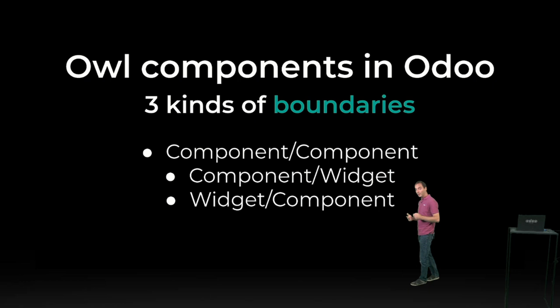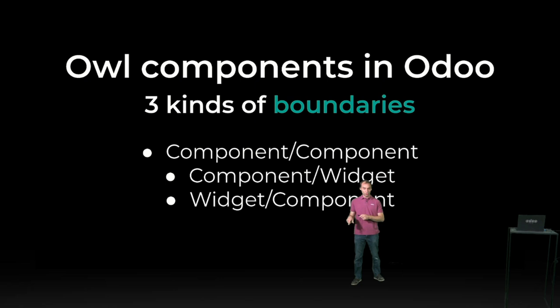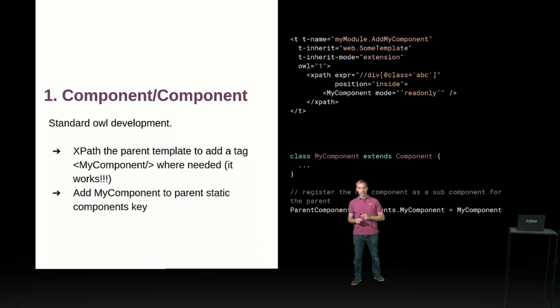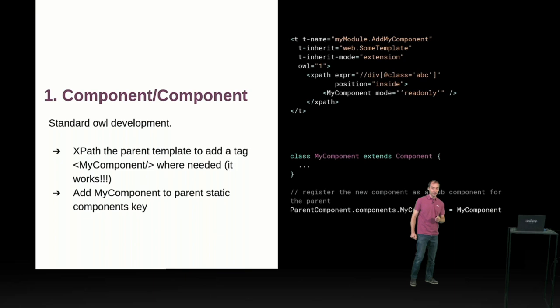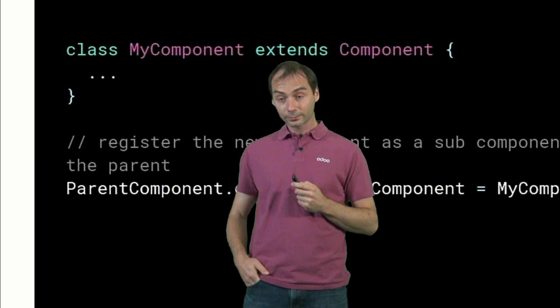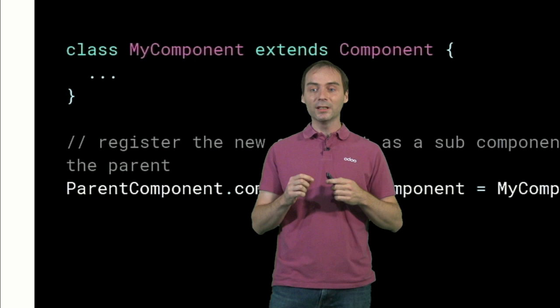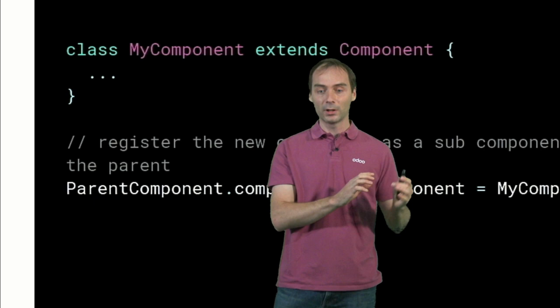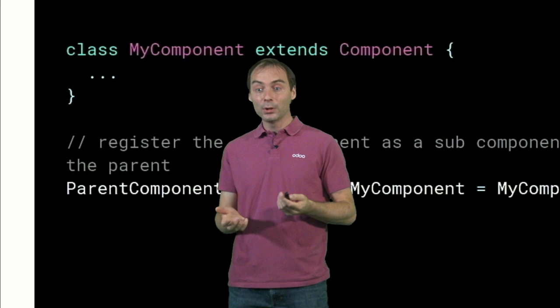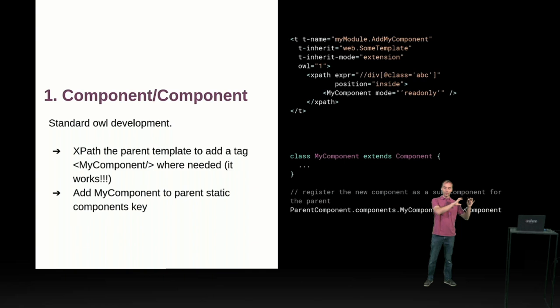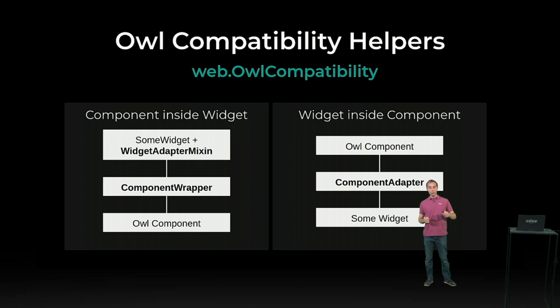We have three kinds of boundaries to cross: components inside components, component inside widget, and widget inside component. The first is the easy case. Since XPath now works with static templates, you can simply add your component inside the template via XPath, then register the new OWL component as a sub-component of the parent. This is much easier than before because you no longer need to monkey-patch the class. We moved a lot of logic from JavaScript to the template world, which is much better.